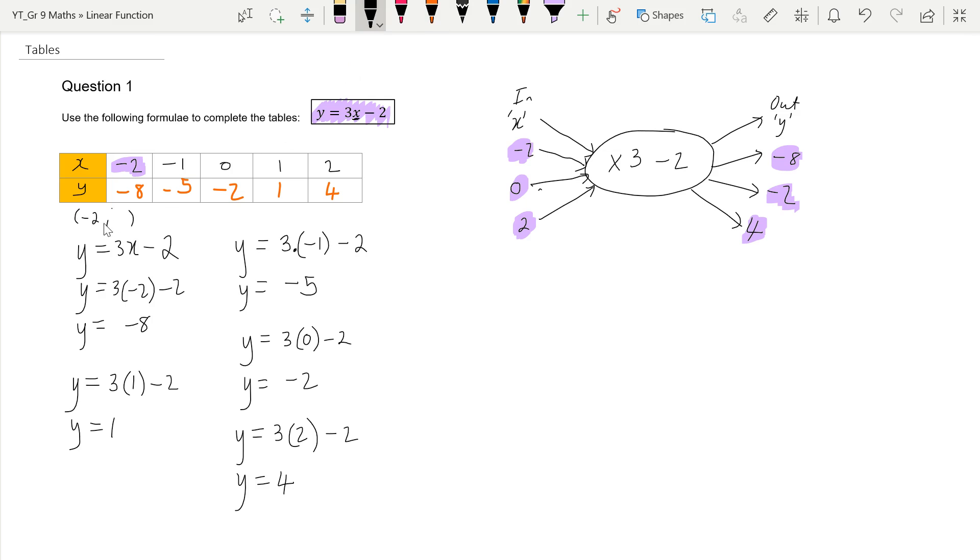When my x is negative 2, my y is negative 8. When my x is negative 1, my y is negative 5. When my x is 0, then my y will be negative 2. When my x is 1, my y will be 1. When my x is 2, my y will be 4.